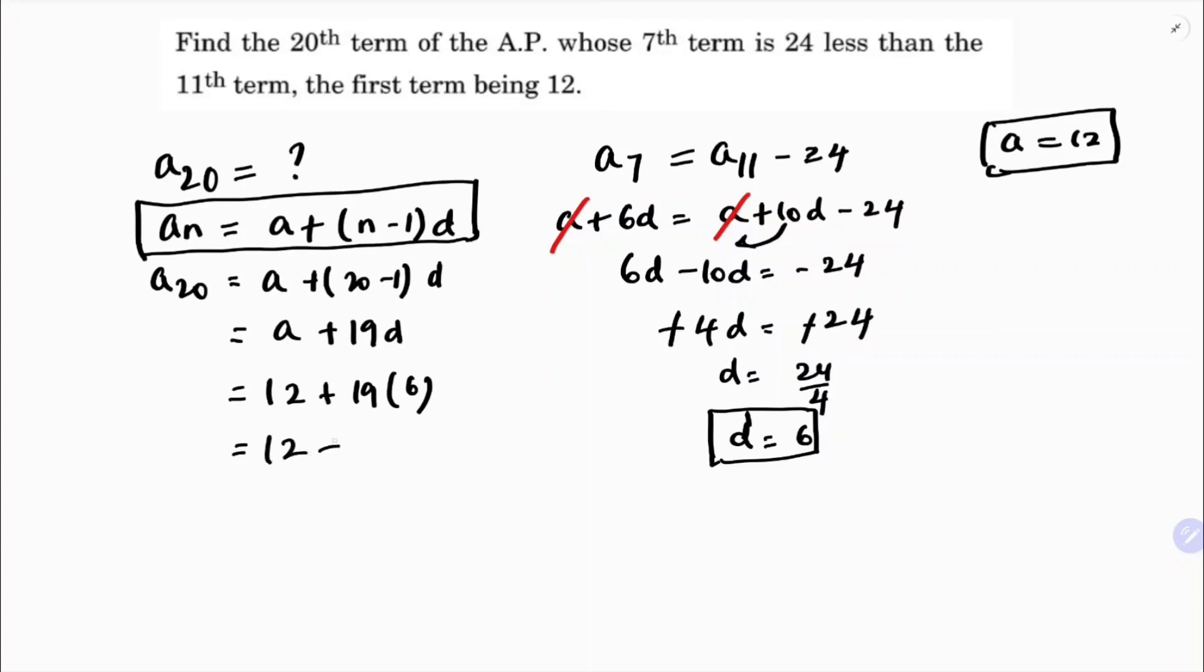12 + 19 × 6 is 12 + 114, which gives you 126. So the 20th term is 126.